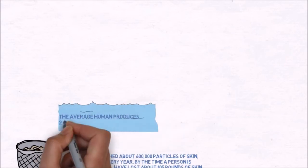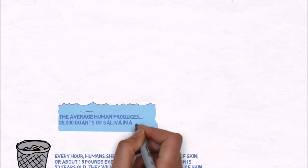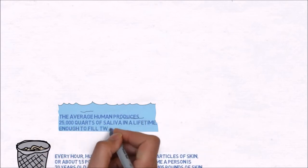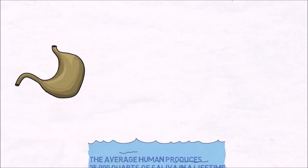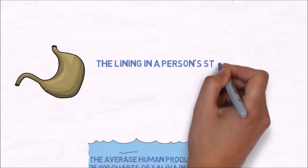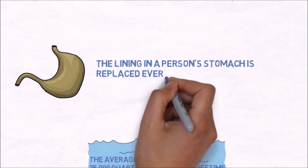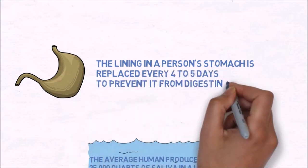The average human produces 25,000 quarts of saliva in a lifetime, enough to fill two swimming pools. The lining in a person's stomach is replaced every four to five days to prevent it from digesting itself.